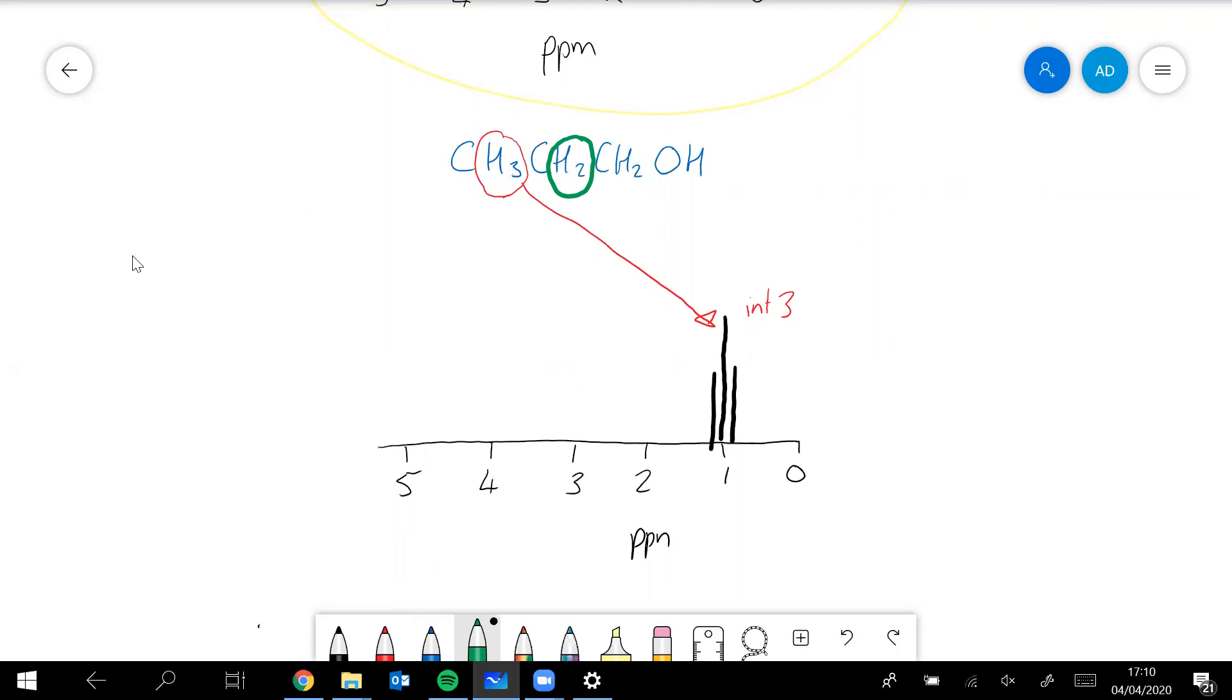So that's going to be split into five plus one, six. That's called a sextet, and that will be fairly close to one ppm, because it's not near any electron negative, it's not too near to the electron of oxygen.